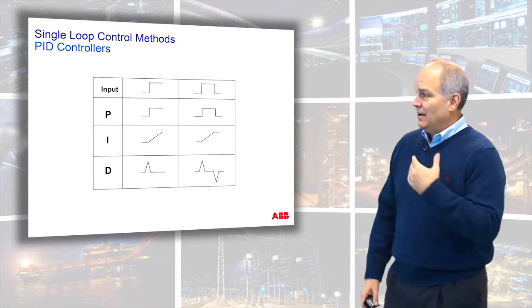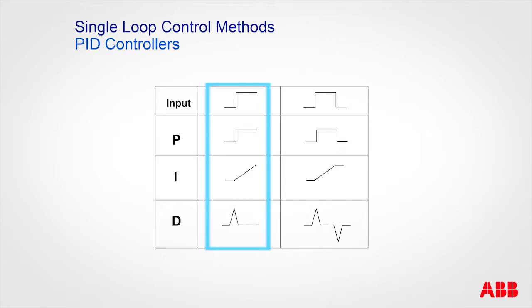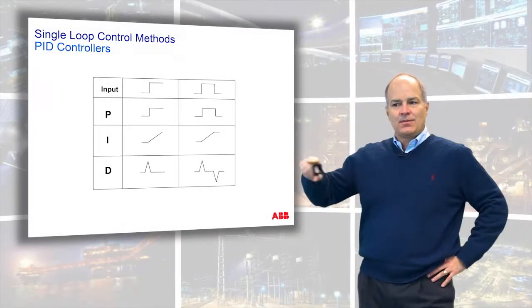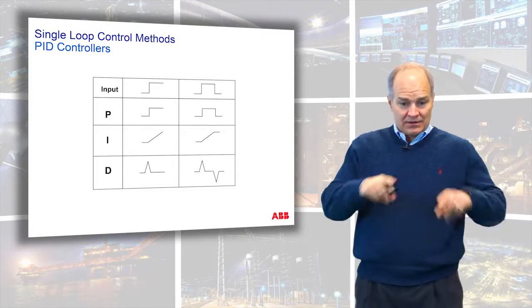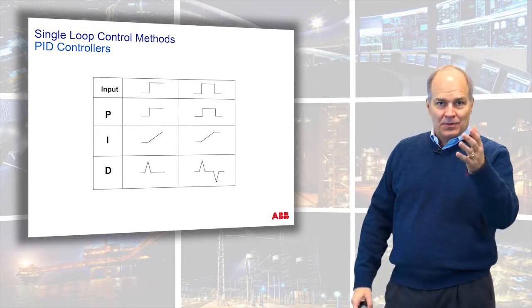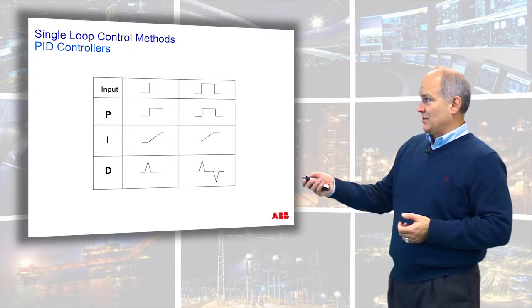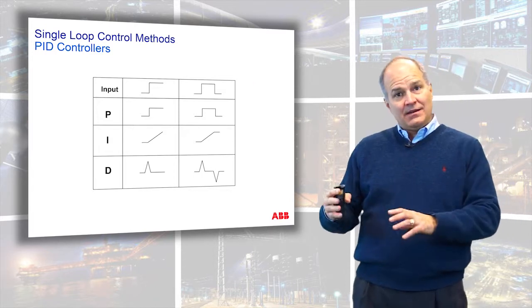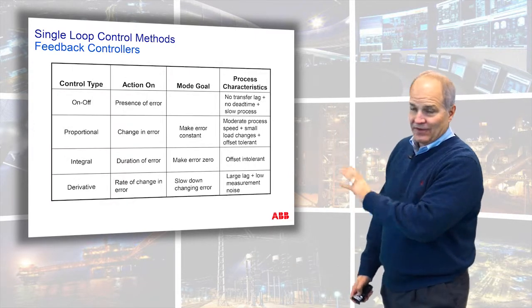This chart summarizes all three modes. With a step change in error: proportional is proportional to the error; integral is the area under the curve; derivative produces a pulse. I recommend drawing a triangle wave and working out what proportional, integral, and derivative would each look like — that really helps you understand PID. Do that before we go into the next section.